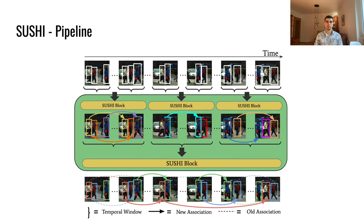SUSHI blocks are stacked in a hierarchical manner. Over multiple levels, SUSHI blocks progressively merge tracklets into tracks spanning over the entire clip. Overall, the GNN in each SUSHI block learns to exploit time-span-dependent association cues, and combined, SUSHI blocks enable tracking over long-time horizons efficiently.